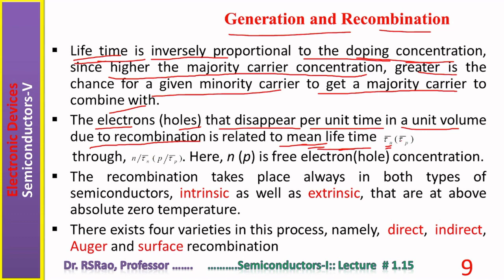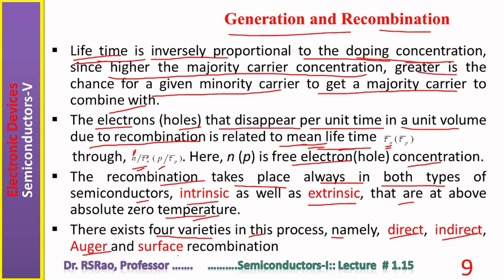For holes, mean lifetime symbol is τ̄_p. Mean lifetime is related to carrier concentration: the recombination rate for electrons is n / τ̄_n, and for holes it is p / τ̄_p, where n and p are free electron and hole concentrations. Recombination takes place in both intrinsic and extrinsic semiconductors as long as they are above absolute zero. There exist four varieties of recombination: direct, indirect, Auger, and surface recombination.